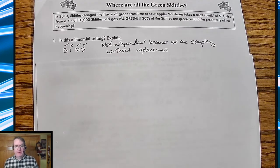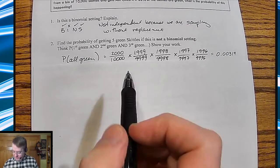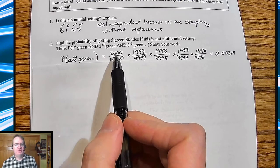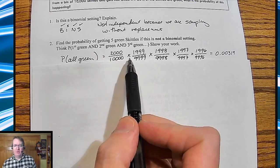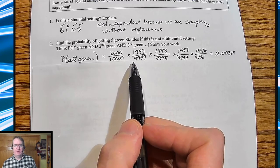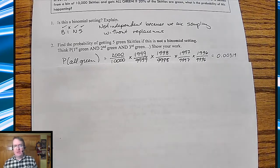What's the probability of it all being green? Well, the first one is going to be 2,000 out of 10,000, right? And then since I've lost one green in both groups, it's gonna be 1,999 over 9,999. So you get an answer of about 0.00319.